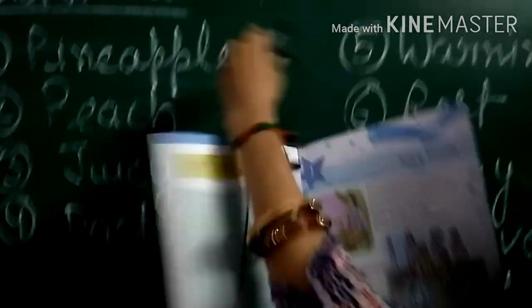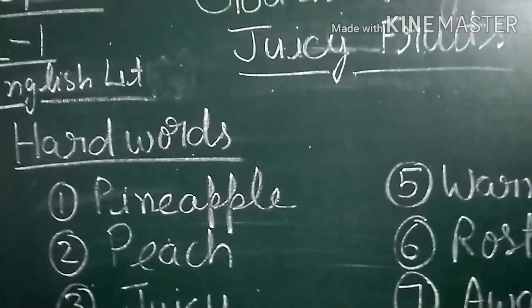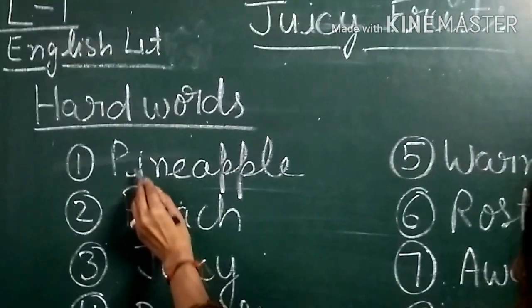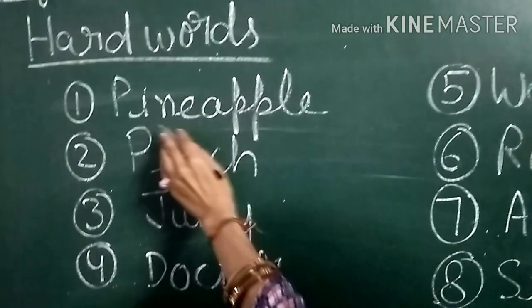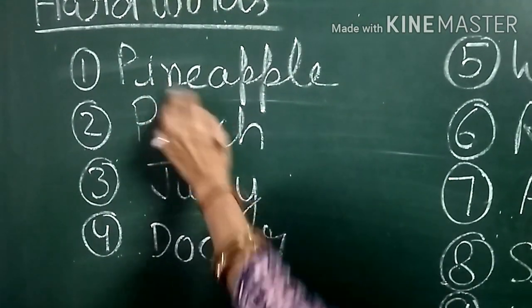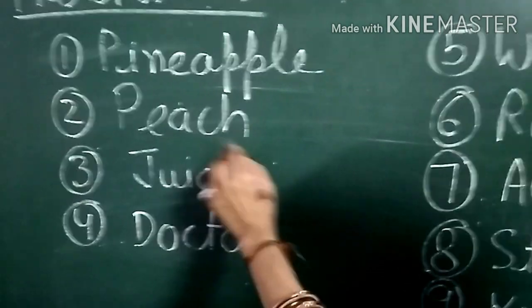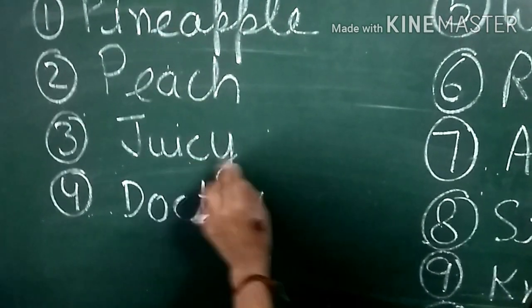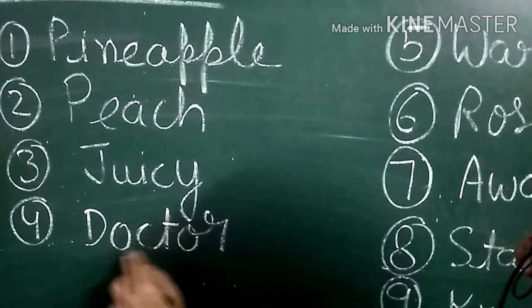I will read the hard words and tell you about them so that you don't need to learn them by memory. Number 1: P-I-N-E-A-P-P-L-E — Pineapple. P-E-A-C-H — Peach. J-U-I-C-Y — Juicy. D-O-C-T-O-R — Doctor.